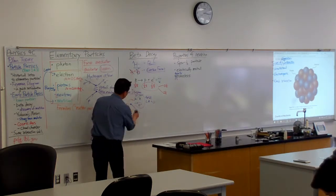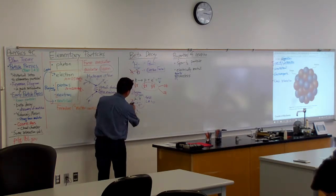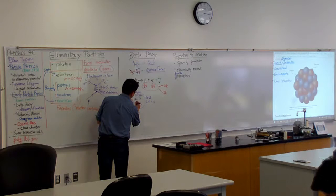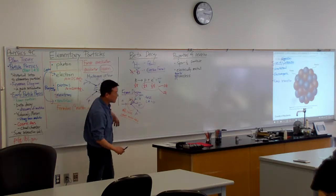Neutron turns into proton, emitting a virtual W minus boson, and this decays into electron and neutrino. So that's what the full picture is. Let's not get into that right now.